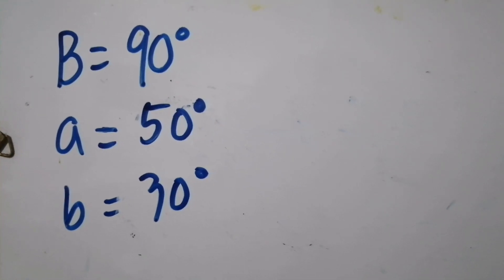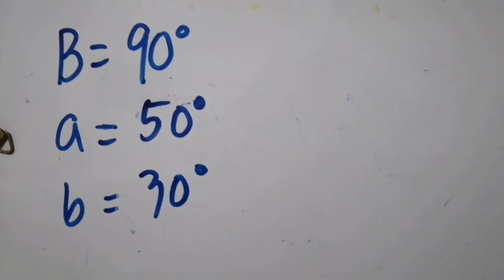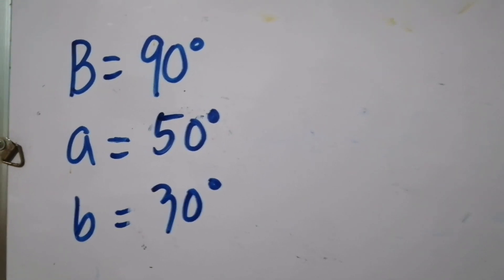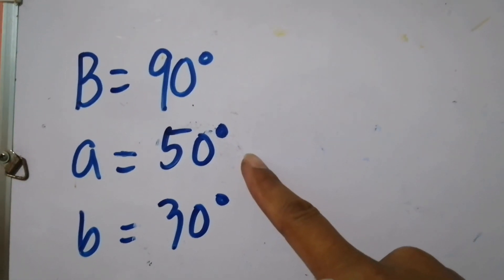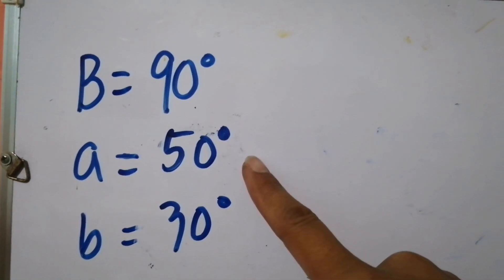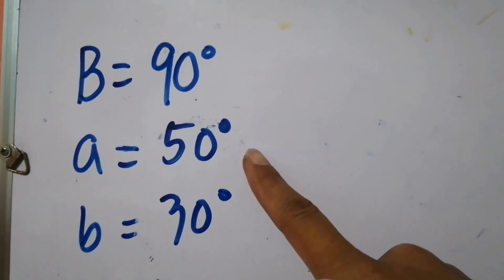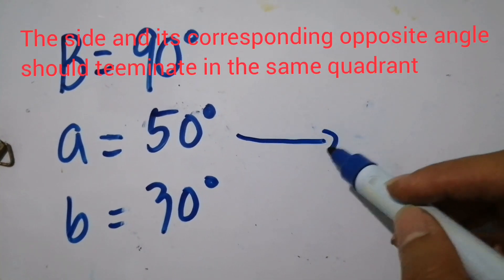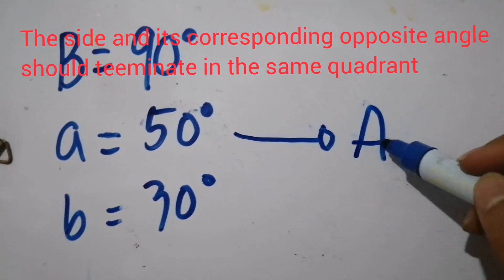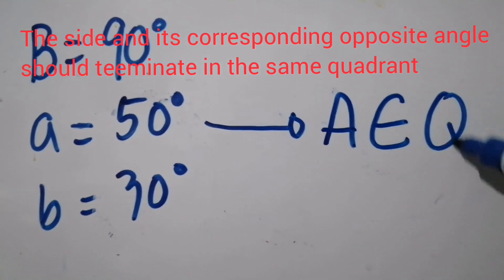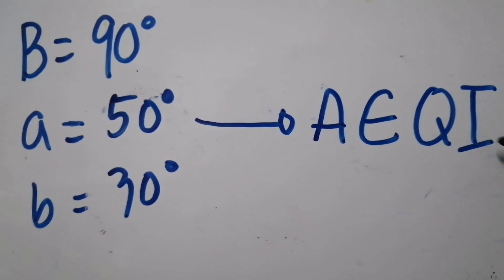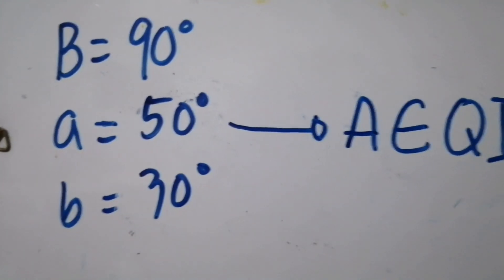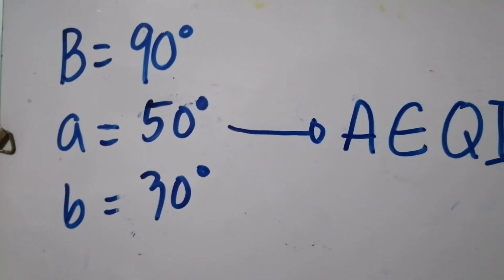Before we use Napier's Rule, we have to consider the theorems from last time. Since small a is 50 degrees, it is less than 90 degrees, so it terminates in Quadrant 1. According to Theorem 1, its opposite angle — angle A — should also terminate in the same quadrant, meaning it is also an acute angle. Small b is the opposite side of the 90-degree angle, so it doesn't matter.